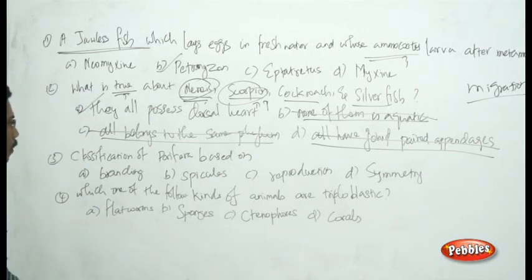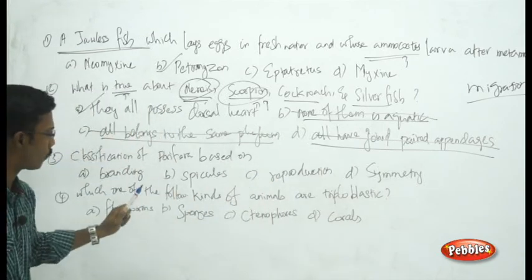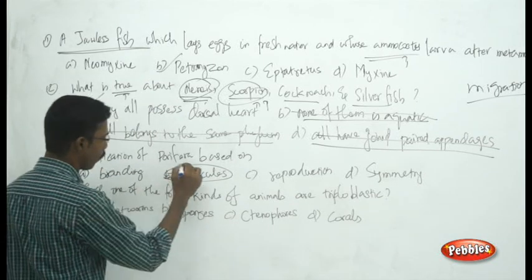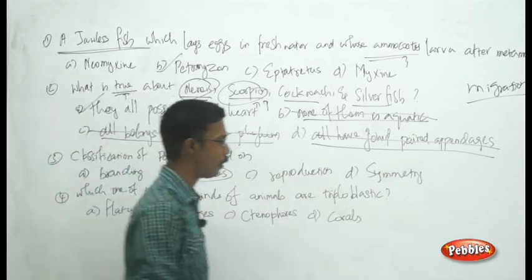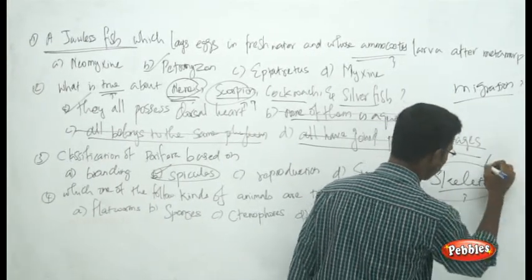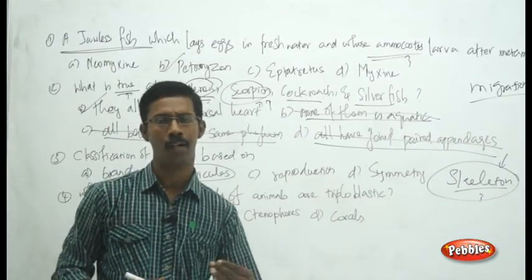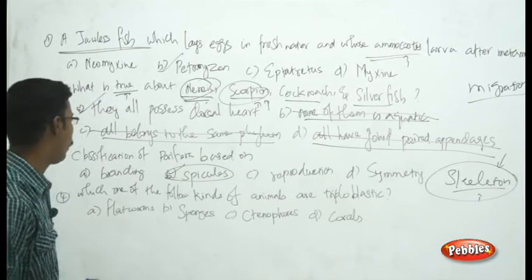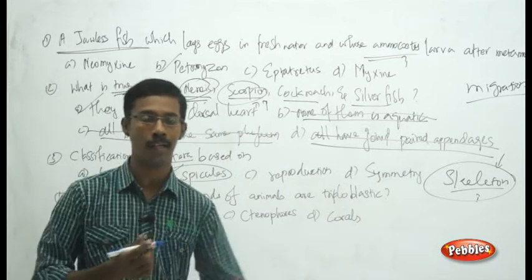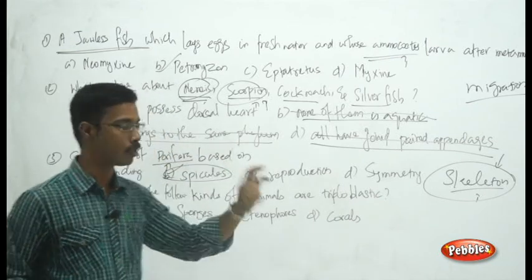See the next question: the classification of Porifera is based on which character? The choices are symmetry, reproduction, spicules, and branching. The answer is spicules. Spicules are the skeletal structures present in Porifera; they provide protection and support. Based on the structure and nature of spicules, we can classify Porifera into three categories, as seen in the introduction classes.